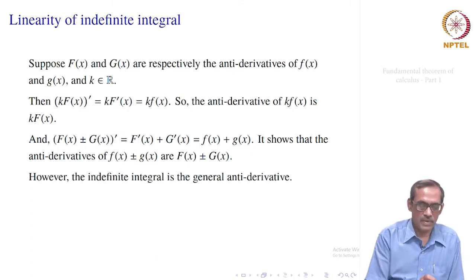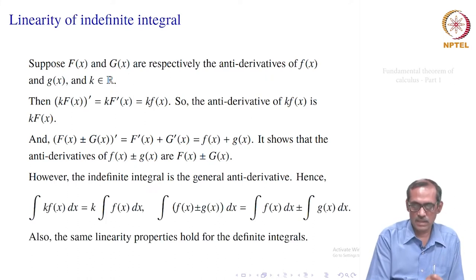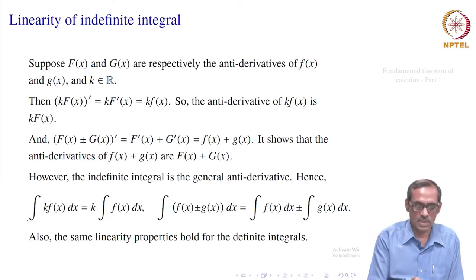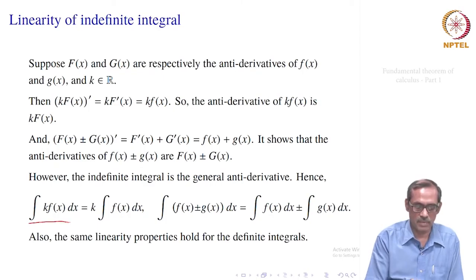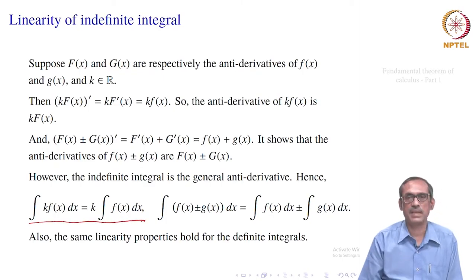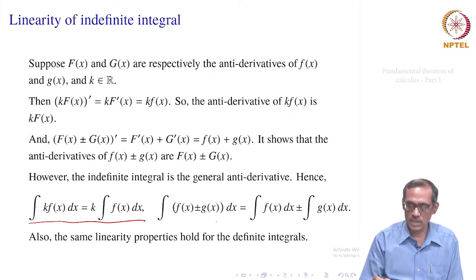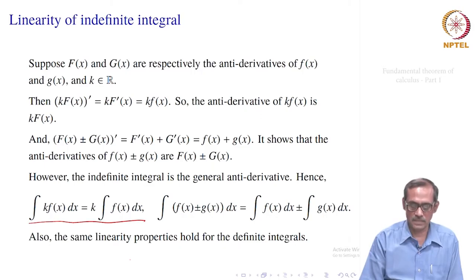Together these two are called the linear properties. The indefinite integral — remember, that is the general antiderivative with some constant c. So we write: indefinite integral of k·f(x) dx equals k times the indefinite integral of f(x). Similarly, integral of f(x) plus g(x) equals integral of f plus integral of g. We know that similar properties also hold for definite integrals.